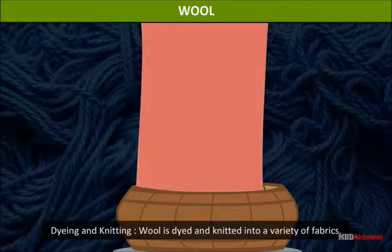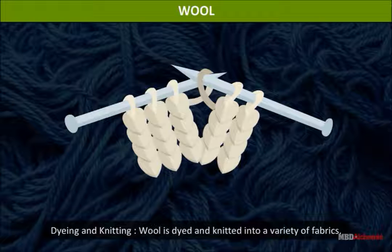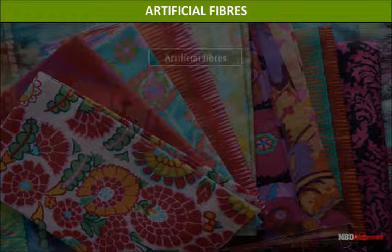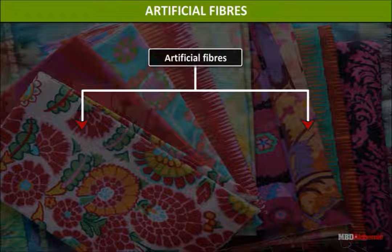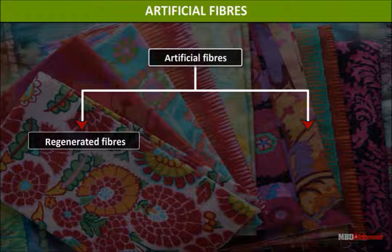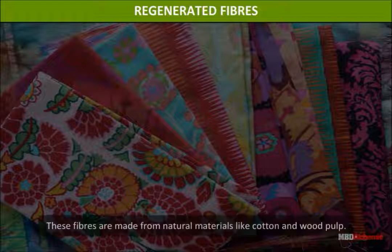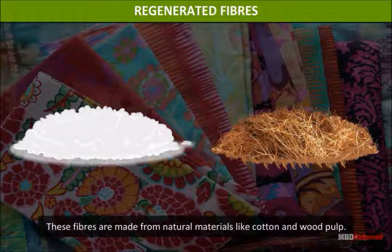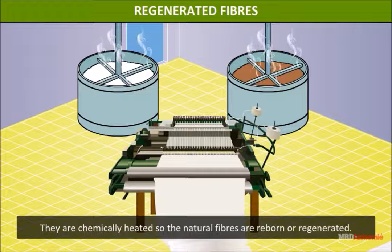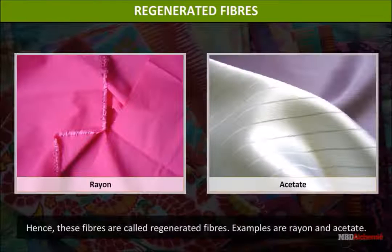Artificial fibers: Artificial or man-made fibers are of two types — regenerated and synthetic. Regenerated fibers are made from natural materials like cotton and wood pulp. They are chemically treated so that the natural fibers are reborn or regenerated, hence these fibers are called regenerated fibers. Examples are rayon and acetate.